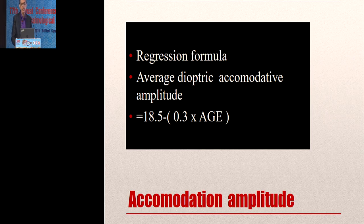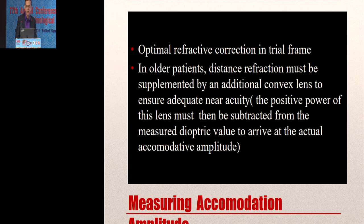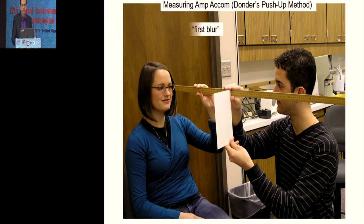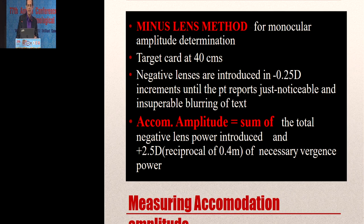Less than four diopters is called presbyopia. There have been studies over a hundred years confirming the same thing. How do we measure accommodation? You can use ready-made formulas like 18.5 minus one-third of age. Clinically, you can bring the near point closer till it blurs and calculate the reciprocal of that near point in meters, or bring a target close then move it far away.